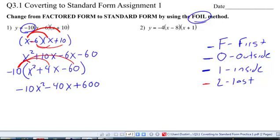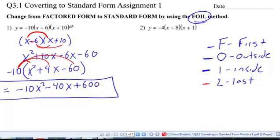Put my Y equals in front, and there is my standard form. So up here you can see the factored form: negative 10, X minus 6, X plus 10. My standard form is negative 10X squared minus 40X plus 600.